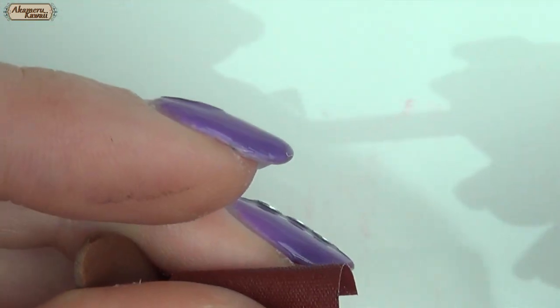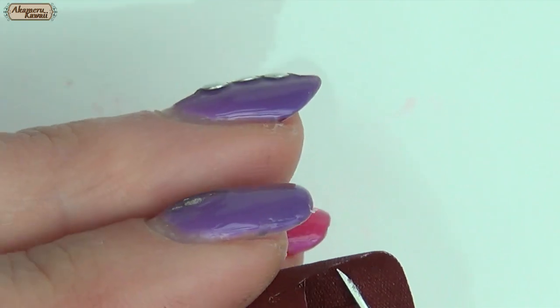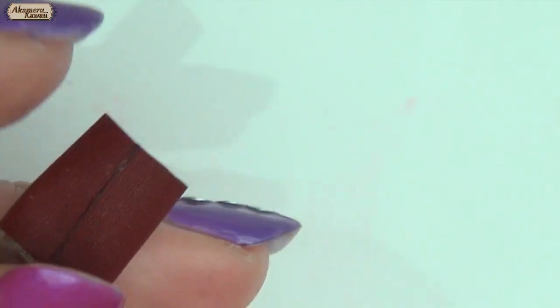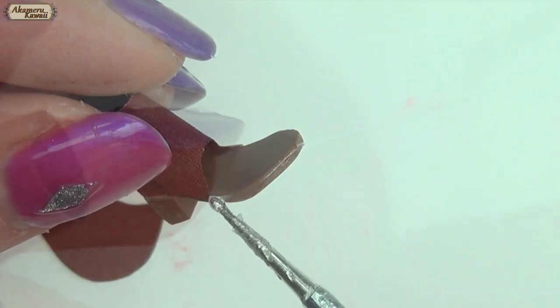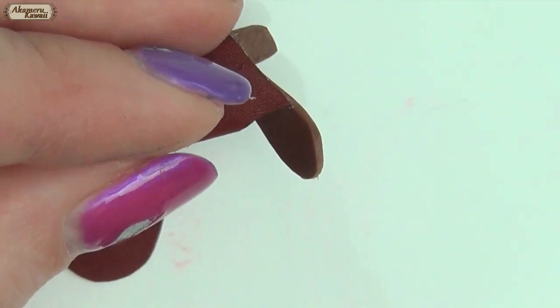Add glue in the fold between the two pieces and press them together. Then cut away excess. Glue on the rounded piece for the tip of the shoe.